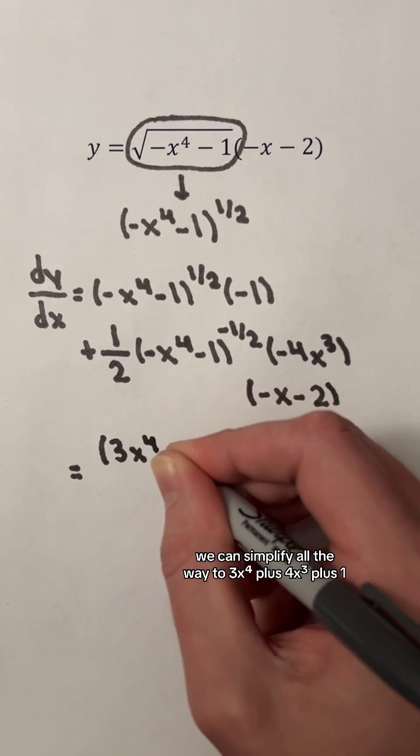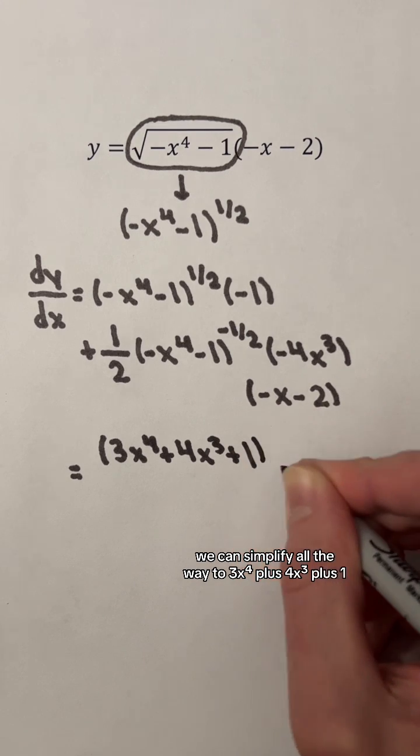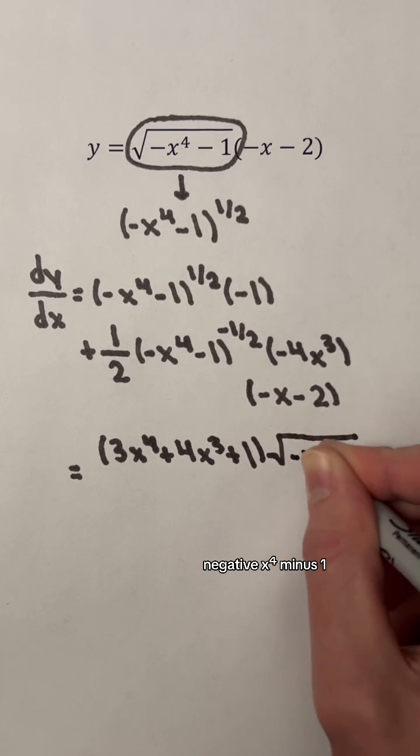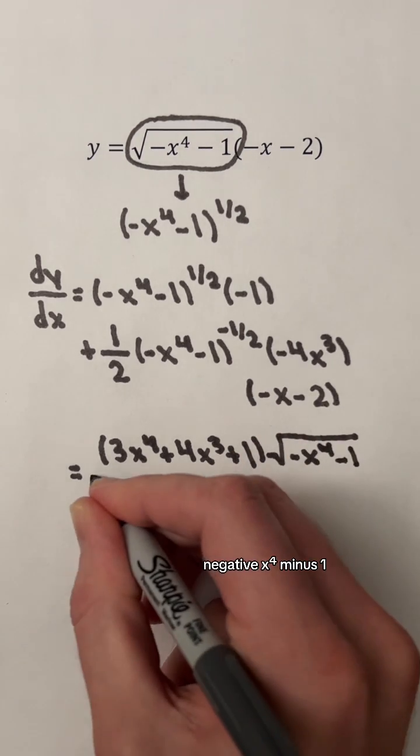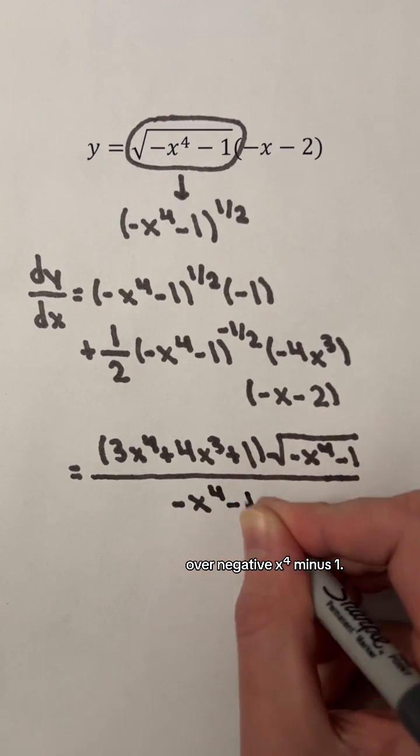Using algebra, we can simplify all the way to 3x to the fourth power plus 4x cubed plus 1 times the square root of negative x to the fourth power minus 1 over negative x to the fourth power minus 1.